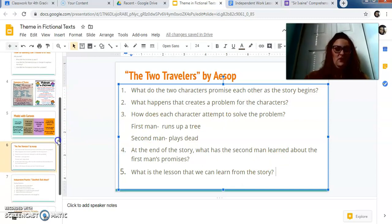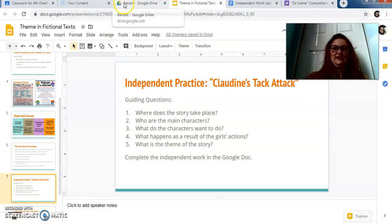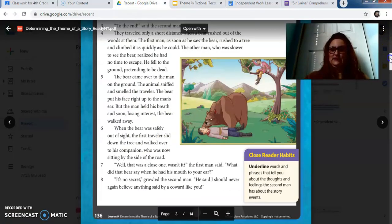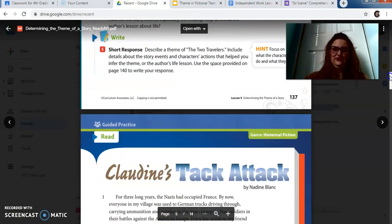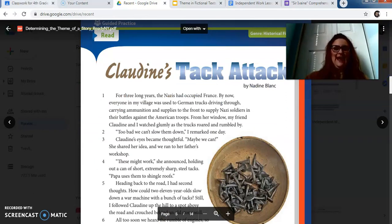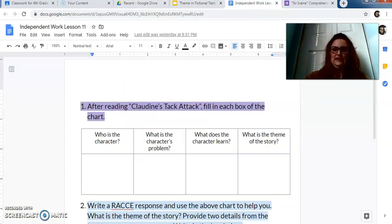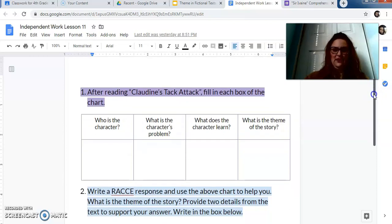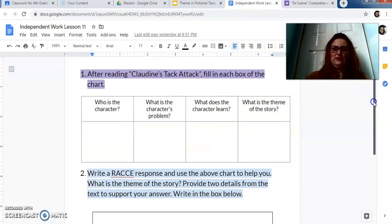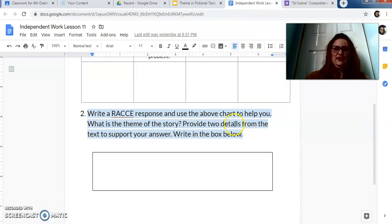So what you are going to do is you are going to read this text called based off of what we did too. So we just did that together. You're going to read the text Claudine's Attack, so it's a mouthful. And you are going to complete the independent work, the same type of thing we just did about, after you read this story, who's the character, what's the character's problem, what's the character to learn, what's the theme of this story. And then you are going to write a RACE response about what the theme of the story is. So if you complete this chart, it would be pretty easy to write the RACE response.